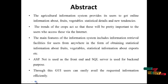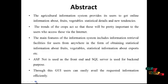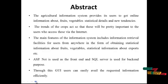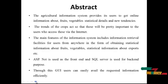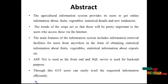Let's start with the Abstract. The Agricultural Information System provides its users with information about fruits, vegetables, statistical details and new tendencies. The trends of the crops are pretty important to users who access these via the internet. The main features include information travel facilities for users from anywhere, obtaining statistical information about fruits, vegetables, and export data.